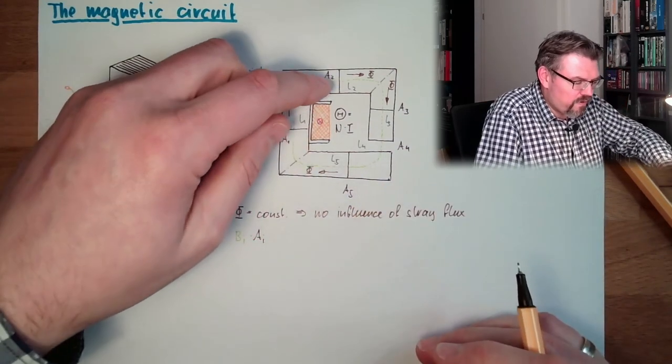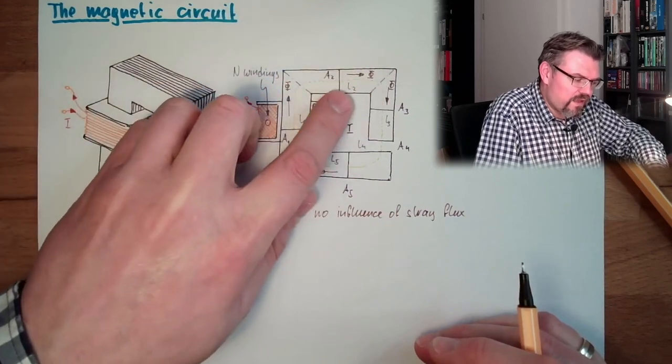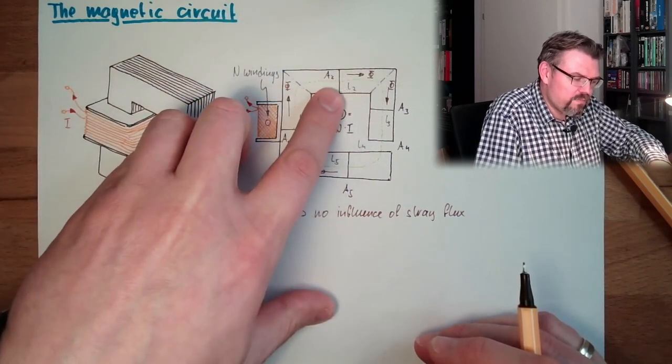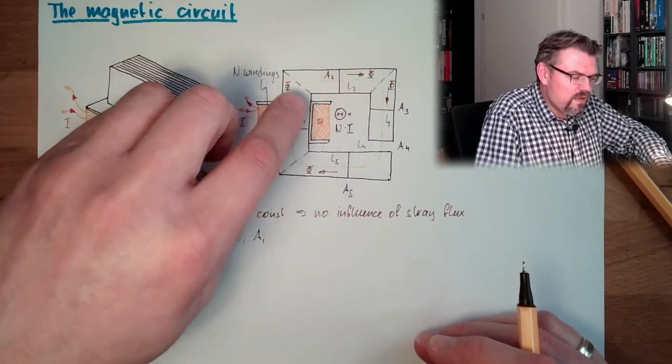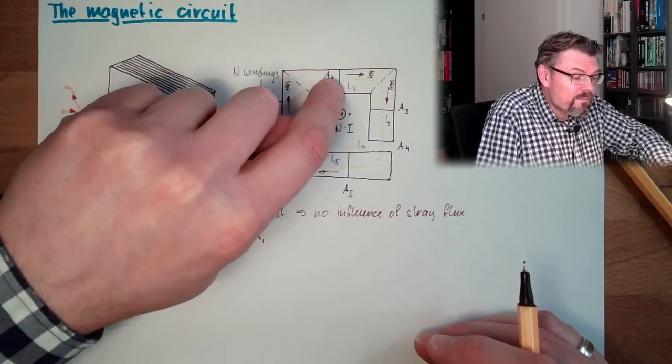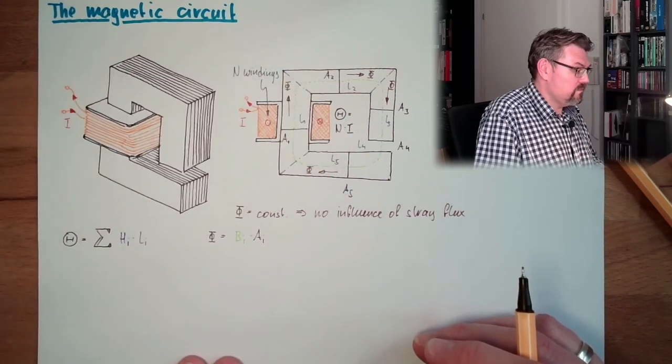So we have the flux density Bi multiplied by Ai, the area. So if we have here in area 2 a certain flux density B2, our phi is B2 multiplied by this cross section here.